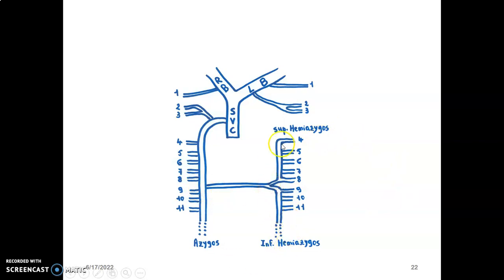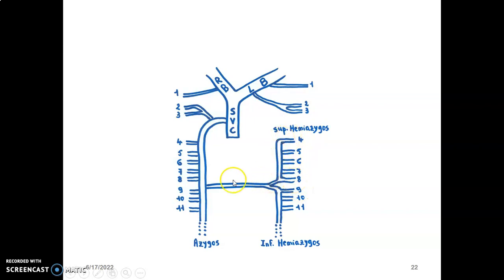The hemiazygos has superior and inferior divisions. The inferior hemiazygos is formed by the union of the left ascending lumbar and left subcostal, and its tributaries include the ninth to eleventh posterior intercostal veins. The superior hemiazygos has tributaries from the fourth to eighth posterior intercostal veins, and all of these drain into the azygos vein.